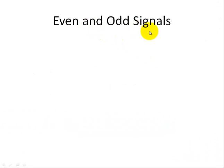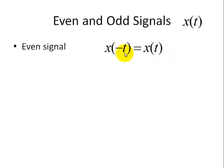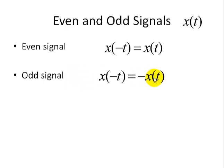Let's look at even and odd signals. Let's say we're given a general signal X of t. What is meant by an even signal? Mathematically, if I'm given an X of t and I substitute inside the argument t for minus t, their values are equal. On the other hand, an odd signal has opposite sign — if I substitute t for minus t, the values of X of minus t and X of t are opposite in sign, so we put a minus sign so that they can be equal in terms of values.